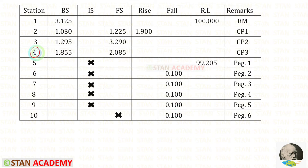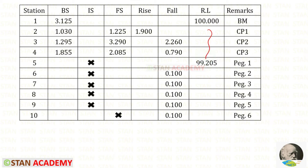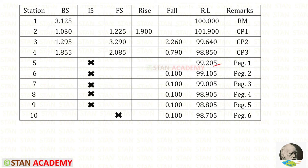Up to the fourth station we can find the rise and fall. Subtracting consecutive readings gives a positive value for rise and a negative value for fall. We can then calculate the reduced levels by applying rise or fall sequentially — adding rise or subtracting fall from each previous reduced level to obtain the next one. In this way we can get all the reduced levels up to station four.